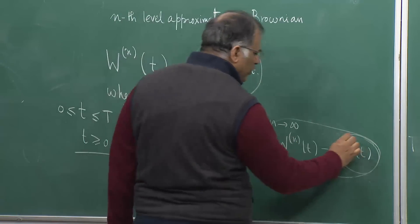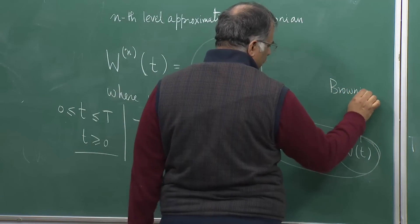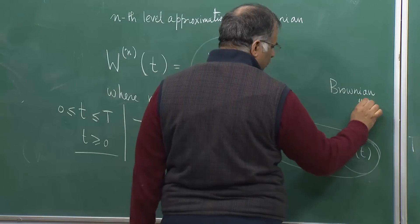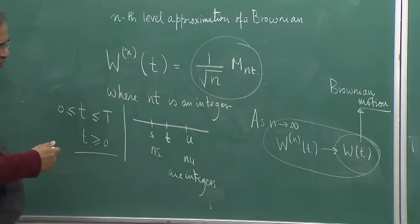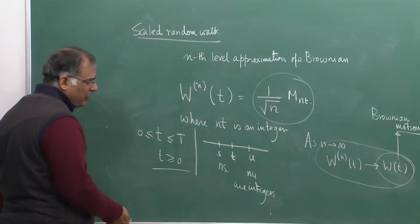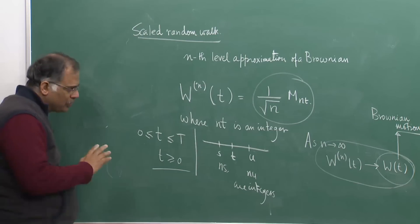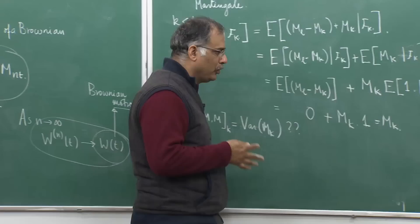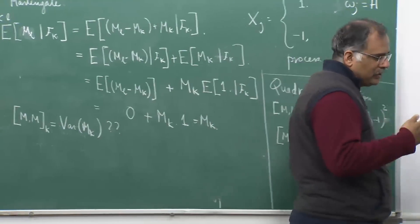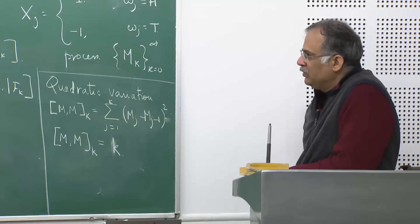This is what we are going to talk about in the next class. Tomorrow we are going to study the properties of Brownian motion for the next two classes. Tomorrow's class will be the last for the second week of the course. In the third week we continue the discussion on Brownian motion and then go on to understand stochastic integrals or Itô integrals and Itô calculus, which is the foundation of any financial mathematics. Thank you very much.